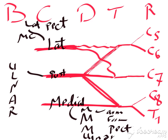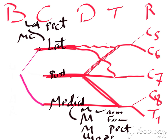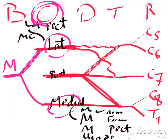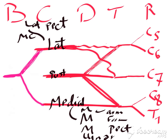Then we have the median nerve — how the median nerve is formed. The medial root from the medial cord and the lateral root of the median nerve from the lateral cord will give the median nerve. So the median nerve is formed by two roots: one from the lateral cord and one from the medial cord.